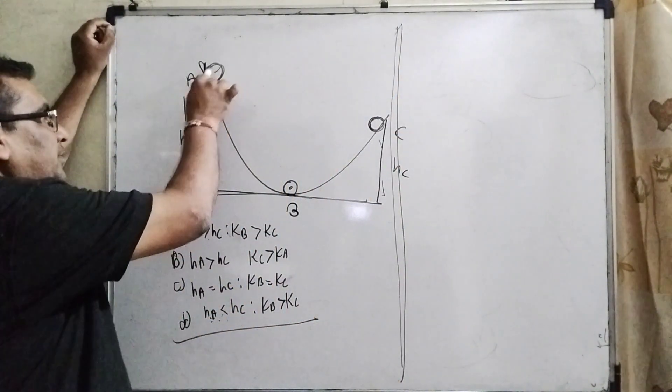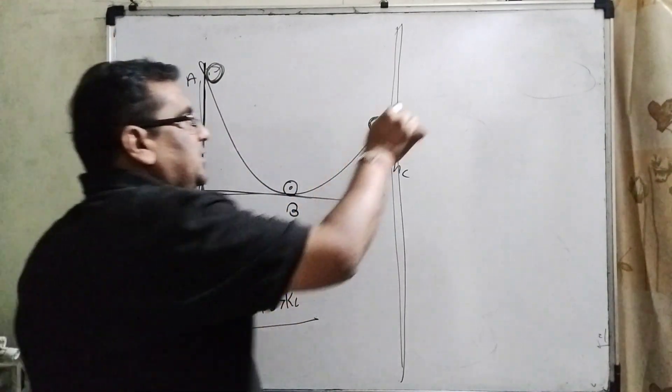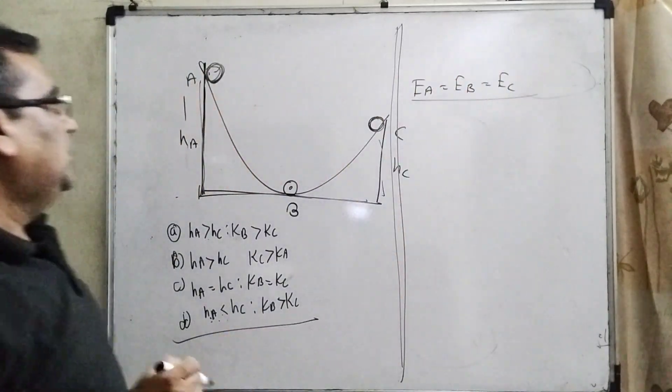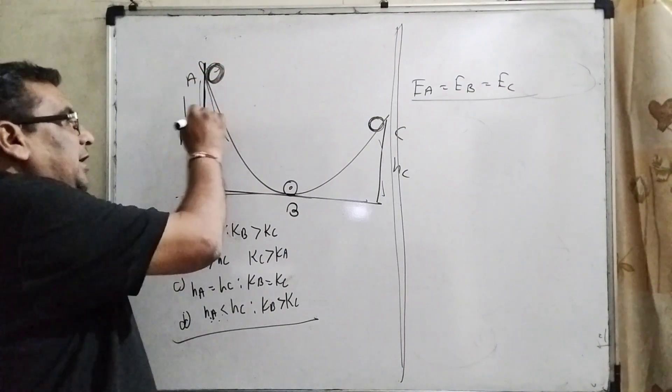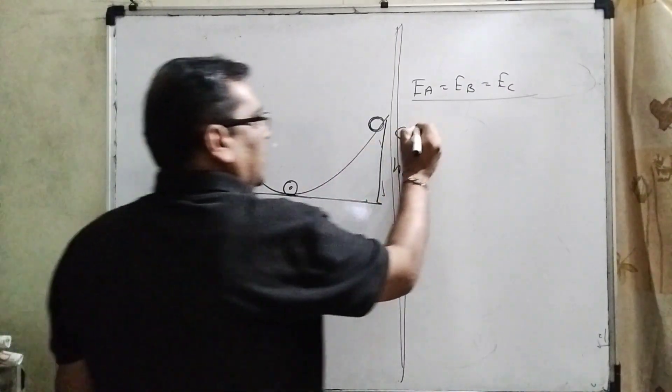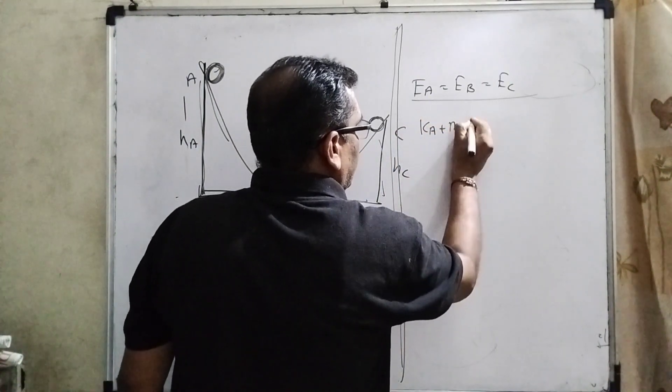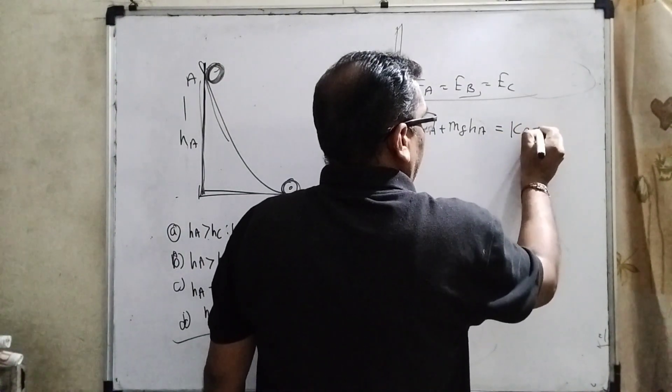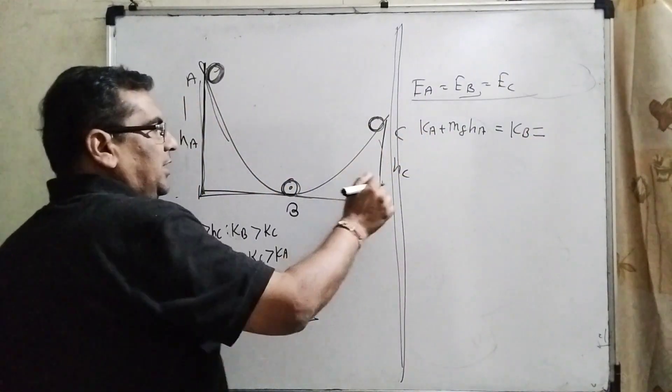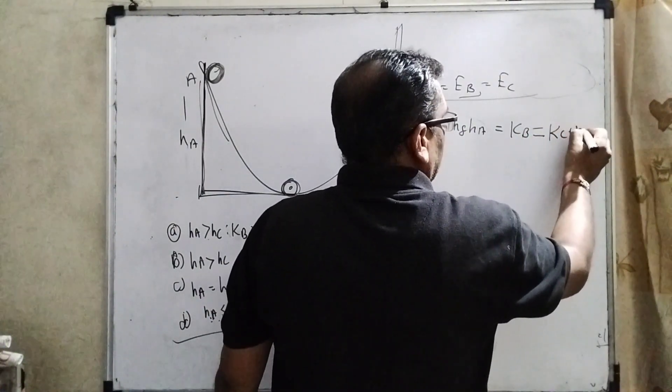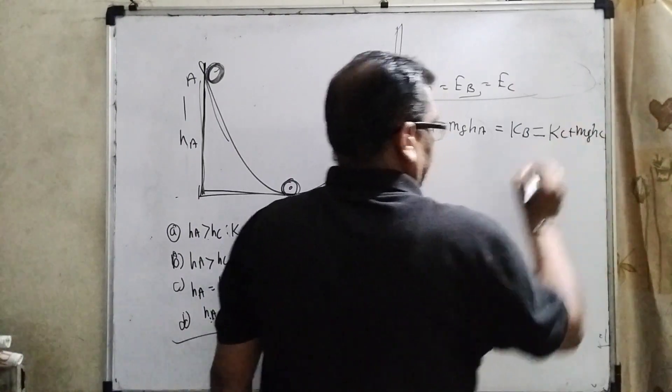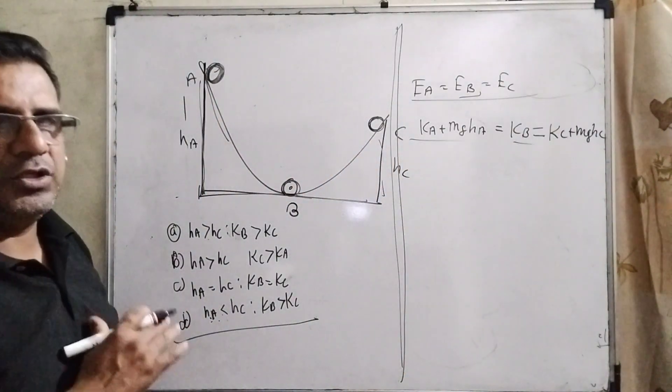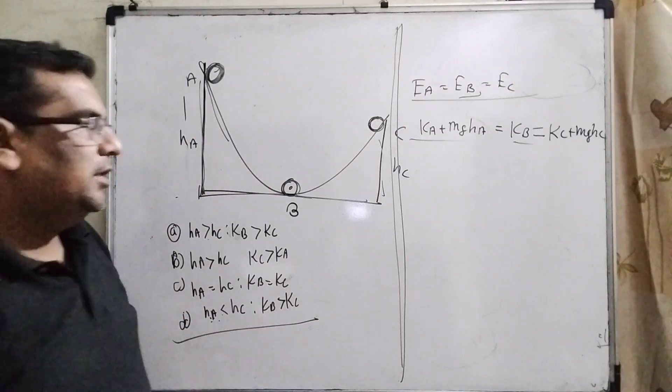So let us first consider that all the energies are conserved. It means EA equals EB equals EC. Now, there is rolling, which means kinetic energy is not zero. So at point A: KA plus MGHA. At point B, only kinetic energy is present: KB. And at C: KC plus MGHC. I hope this point is clear, because laws of conservation of energy mean no energy can be produced nor can be destroyed.